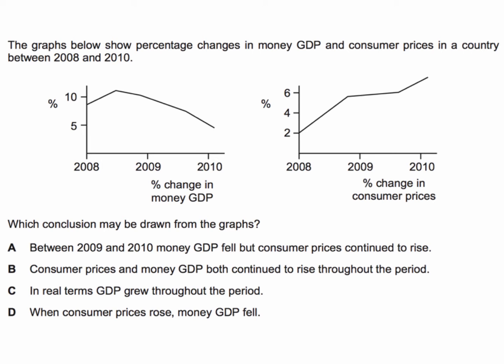So this is a data application question. On the left hand side we have the rate of growth of money GDP. On the right hand side the rate of growth of consumer prices. Crucially, it's not the level of GDP, it's not the level of consumer prices — it's the rate of growth in percentage terms.